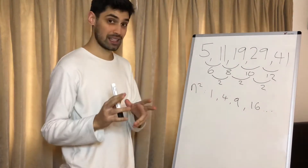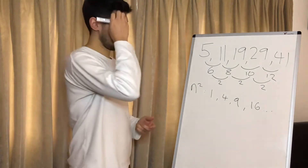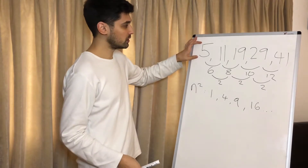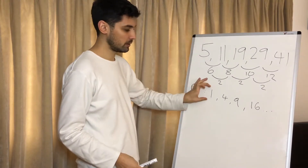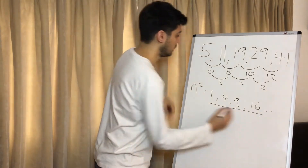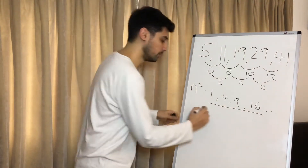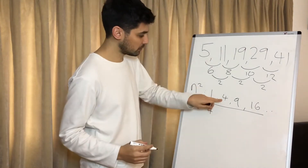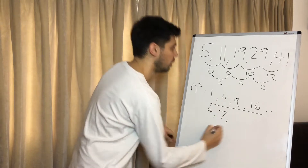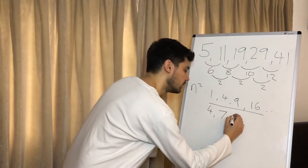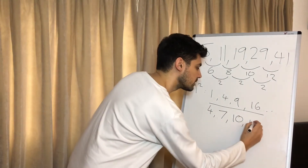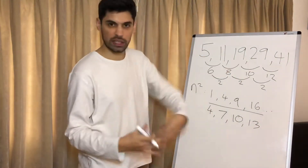Now this next step is one that people tend to forget or get wrong — try and remember it like this: we do the original sequence minus this n squared sequence. Very simple maths really. So 5 take away 1 is 4; 11 take away 4 is 7; 19 take away 9 is 10; 29 take away 16 is 13. We only need four terms, we don't need to go on for too much longer.